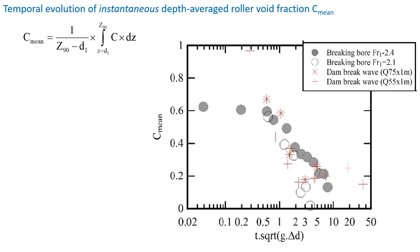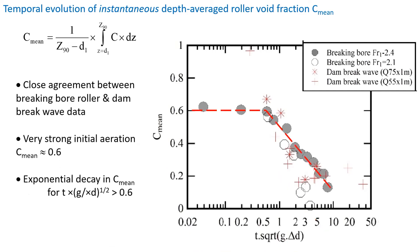Despite the massive physical differences between a dam break wave propagating on dry bed and a breaking bore propagating on initially a thick layer of water, we see very strong initial aeration of the leading edge, nearly 60 percent in depth average void fraction, followed by a quasi-exponential decay in the mean void fraction.